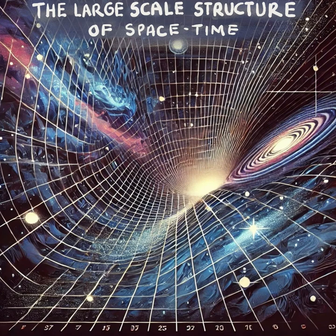So, first things first — what is a singularity, really? We hear the term, and it's usually in the same breath as black hole, but what's the working definition here? Hawking and Ellis describe a singularity as basically a point in space-time where the laws of physics, as we understand them, just stop working. Imagine a region of space-time where the boundary keeps shrinking, getting smaller and smaller until it's zero — and not over an infinite amount of time, but a finite amount. That's a singularity. That already sounds like something out of a science fiction movie, but instead of made-up jargon, we've got serious physics.